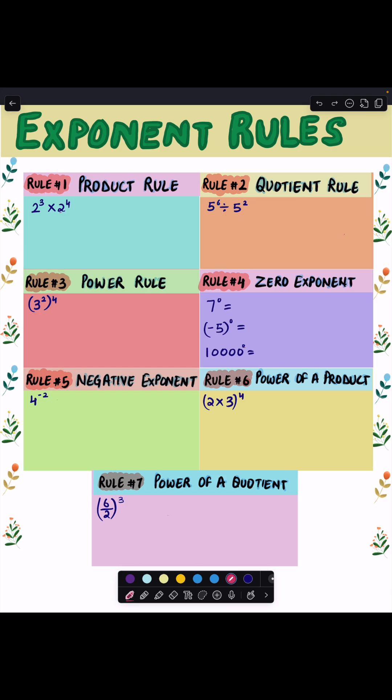Rule number one is the product rule, and it says when you multiply numbers with the same base, just add the exponents. Let's see why. We can write down 2 raised to power 3 like this, and